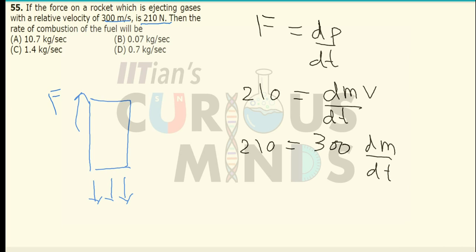So if I calculate the value of dM by dt, that is the rate at which the gases are ejected, it will come out to be 0.7. Two zeros will get cancelled out and it will be equal to 0.7 kg per second which is option number D.